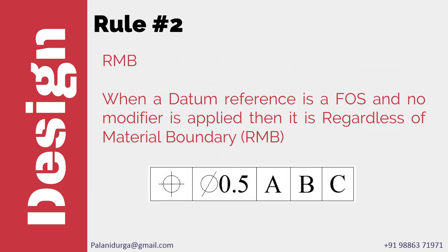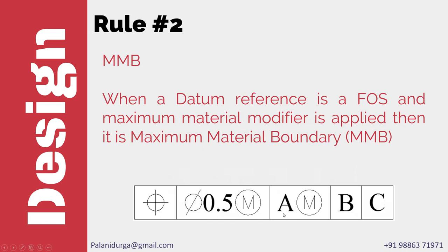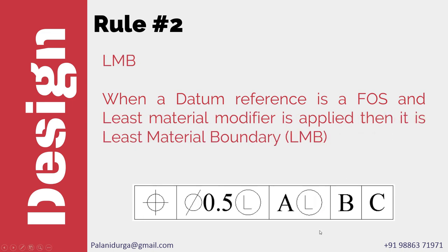In this presentation I have used three new terminologies: RMB, MMB, and LMB. Whenever there is a datum reference that is a feature of size with no modifier symbol, we call it regardless of material boundary, or RMB. Whenever the datum reference is a feature of size with a maximum material modifier, we call it maximum material boundary, or MMB. Whenever there is a datum reference which is a feature of size with a least material modifier, we call it least material boundary, or LMB.